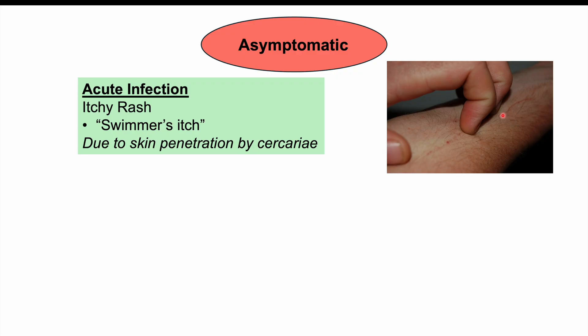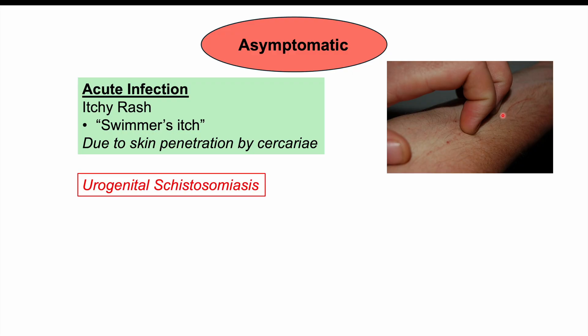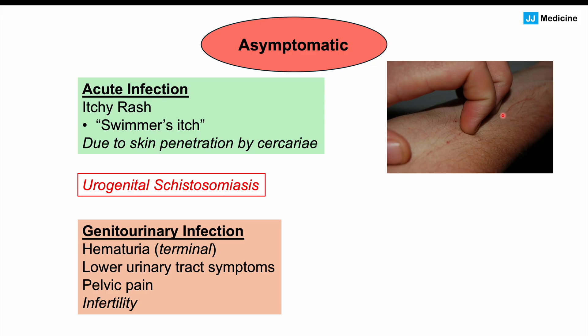Some species lead to gastrointestinal symptoms, and some cause a condition known as Katayama fever. With regards to Schistosoma hematobium, it leads to urogenital schistosomiasis — a genitourinary infection with signs and symptoms involving the bladder and even the male and female reproductive systems. A key symptom is hematuria, or blood in the urine. Characteristically, the patient may not have blood in the urine at first, but once they finish urinating, there will be blood at the end — this is what we call terminal hematuria, and it is a key specific finding of urogenital schistosomiasis.